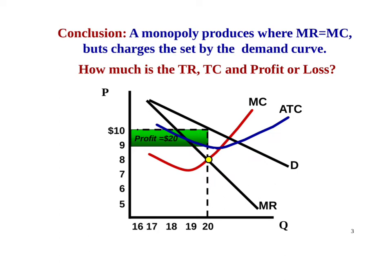If our total revenue is $200 — 20 times $10 — and our total cost is $9 times 20, which is $180, the part that is left, this profit right here, the gap between the price and the ATC times 20 units, we know that this is a monopolist making a profit. A monopolist making a loss would find that their ATC is way up higher. MR equals MC is the same, but the ATC would be greater. Also, keep in mind your AVC can be on the graph — as long as the price of $10 is greater than your minimum AVC, this is a firm that will not shut down.